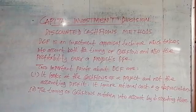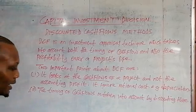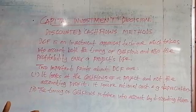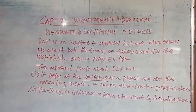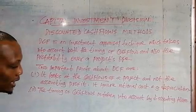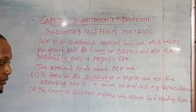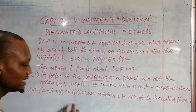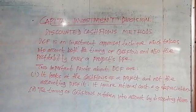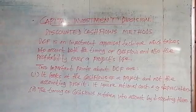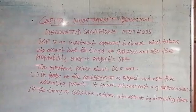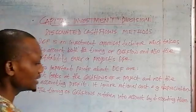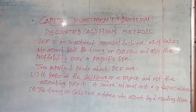The second assumption is that any cash flow that accrues or flows out during the year is assumed to be received at the end of that year. Any cash flow that occurs during the year — whether in January, February, March, April, May, June, or July — is assumed to occur at the end of that particular year.